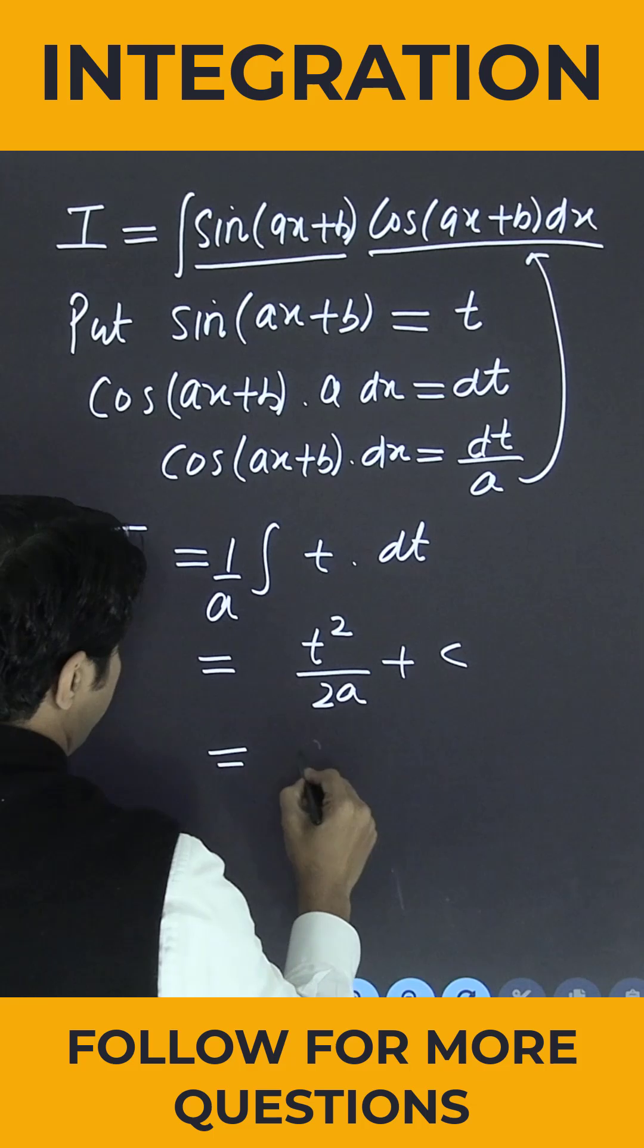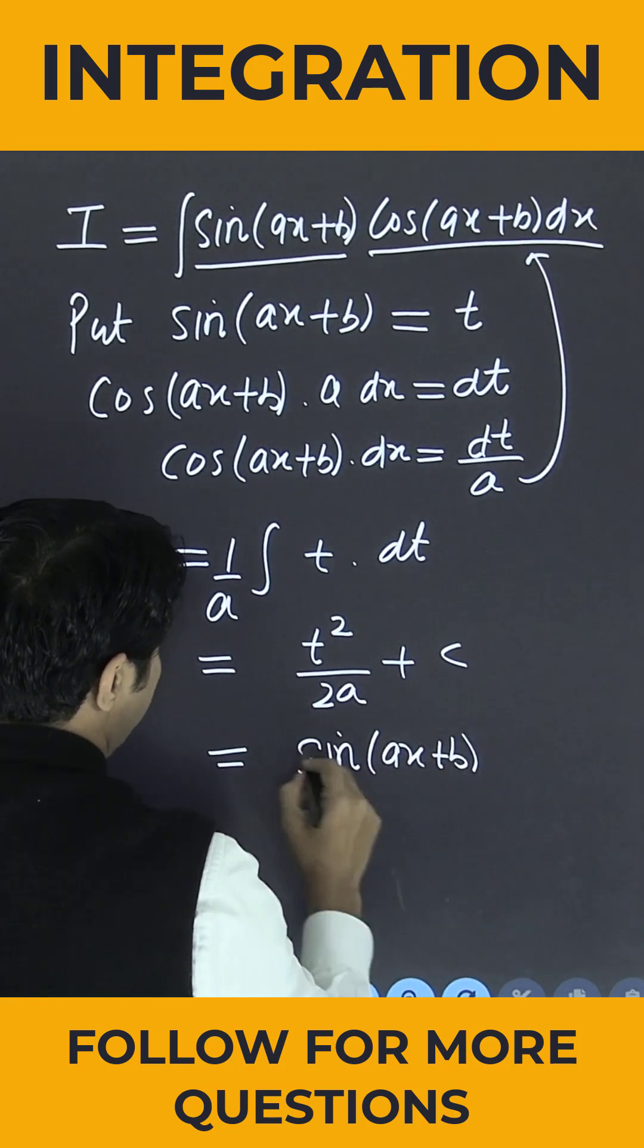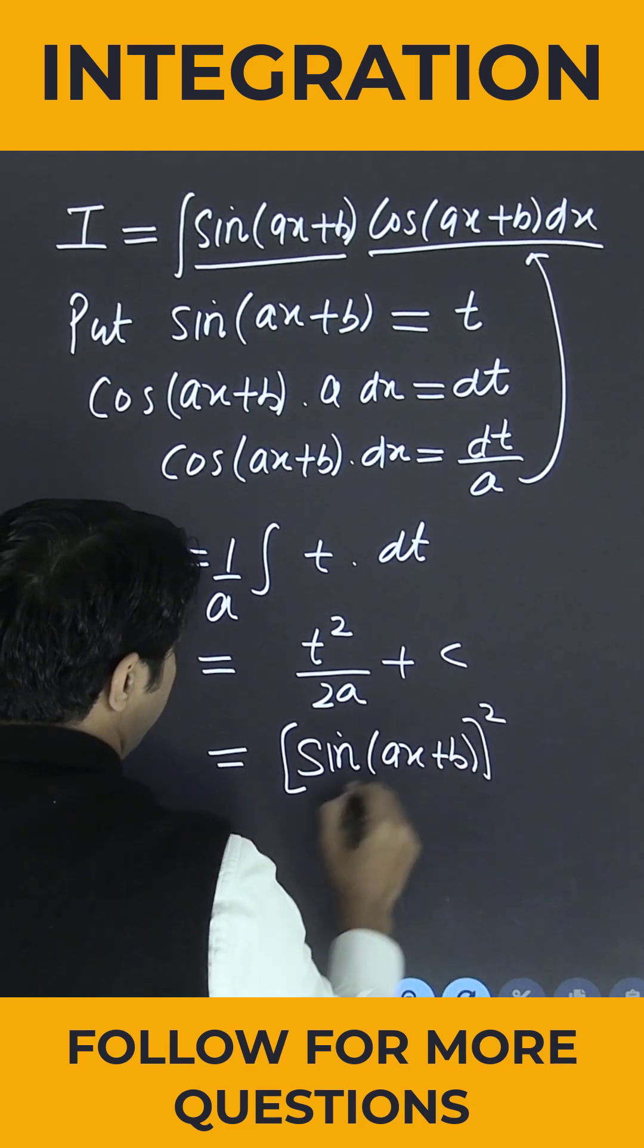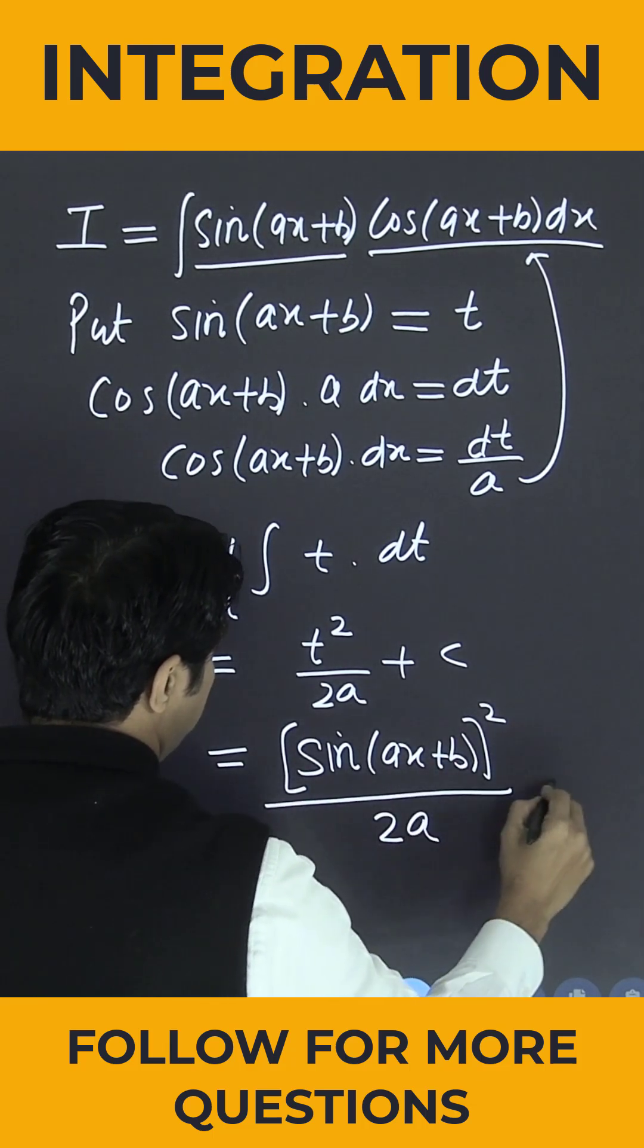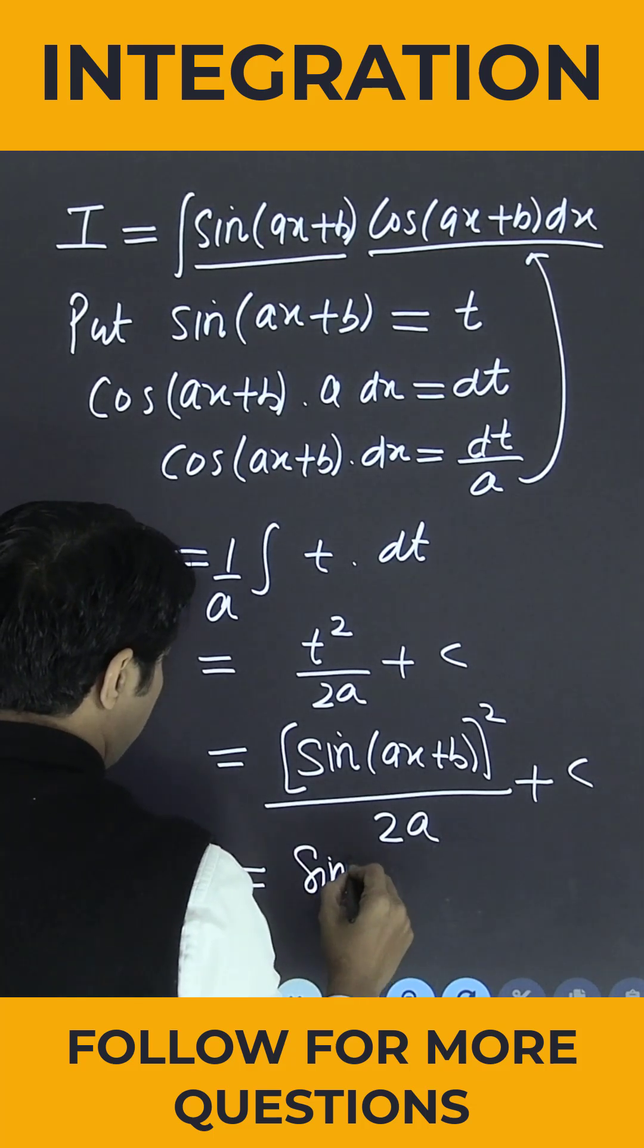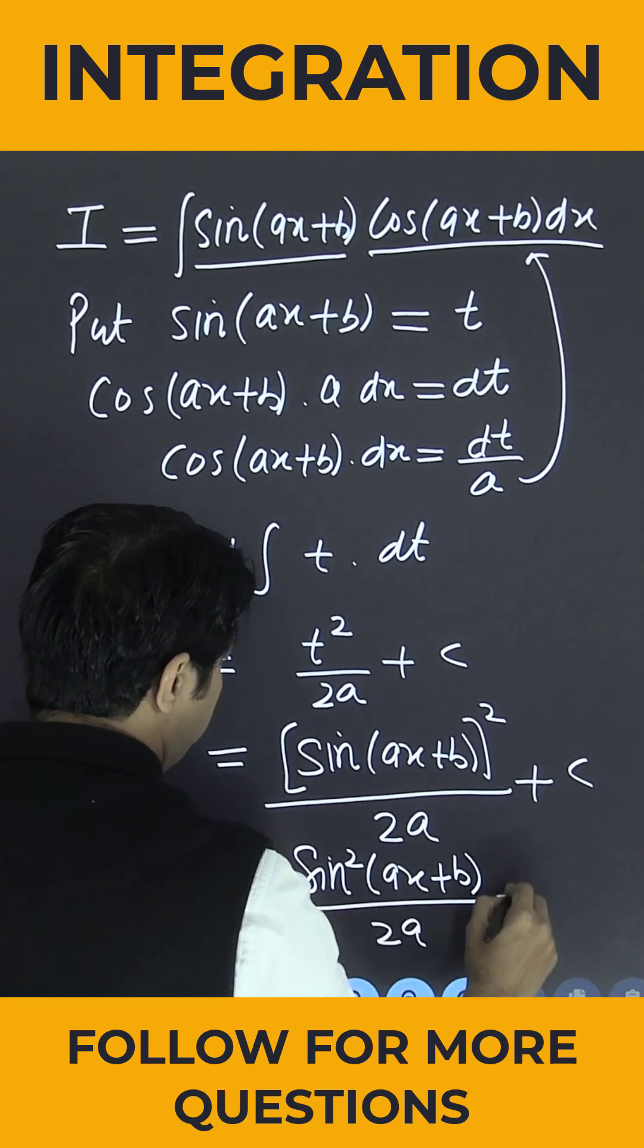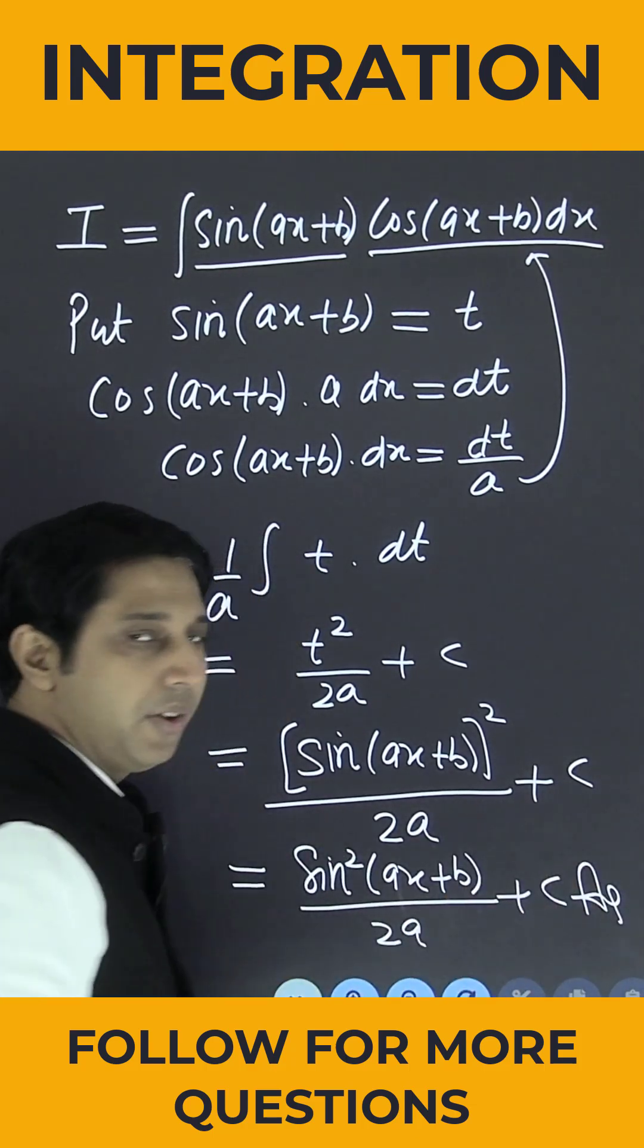What is the value of t? This is sin of ax plus b whole square divided by 2a plus c. Or you can also write sin squared of ax plus b divided by 2a plus c. This is the answer. Thank you.